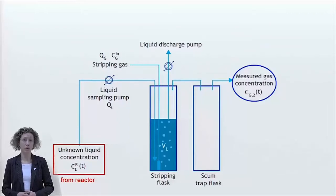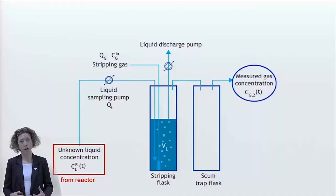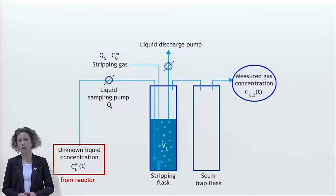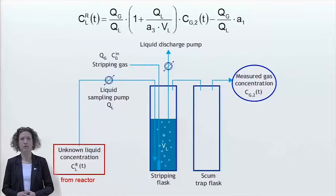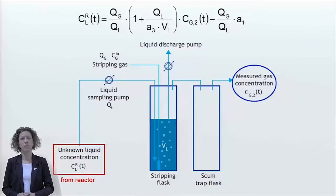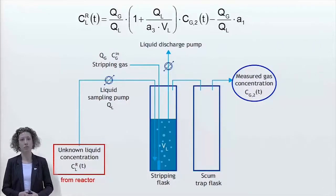The stripping gas can be nitrogen gas but also outside air can be used. After the stripping gas has passed through the liquid in the stripping flask, it is sent over the scum trap flask. This is an empty bottle to collect possibly entrained scum before sending the stripping gas to the gas phase analyzer, where we monitor its concentration of N2O, denoted as Cg2. The relation between the dissolved concentration of N2O in the reactor and the concentration measured by the gas phase analyzer is given by this relation.